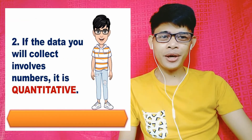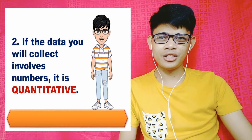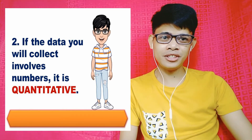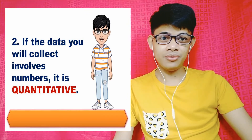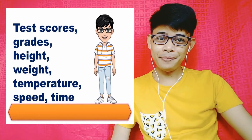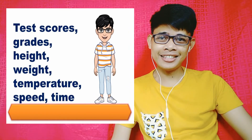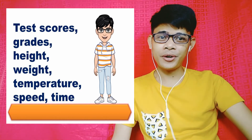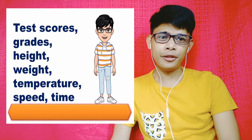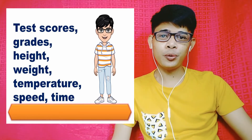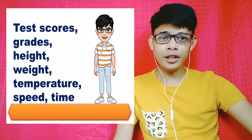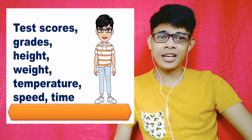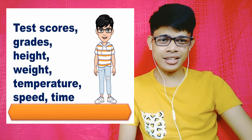Another tip to identify whether a research title is quantitative or qualitative is: if the data you will collect involves numbers, it is considered quantitative research. Remember, if it involves numbers, it is quantitative in nature. For example, if your research involves data like test scores — 10, 9, 8, 7, 6, etc. — or grades like 90 or 95, those are numerical. The height of a person, weight, temperature, speed, and time can all be expressed in numbers. Once your research collects data on these things, your research is quantitative in nature.